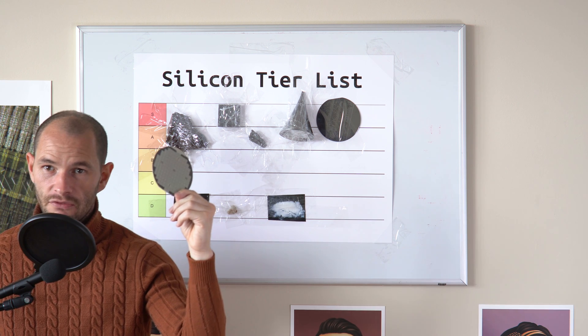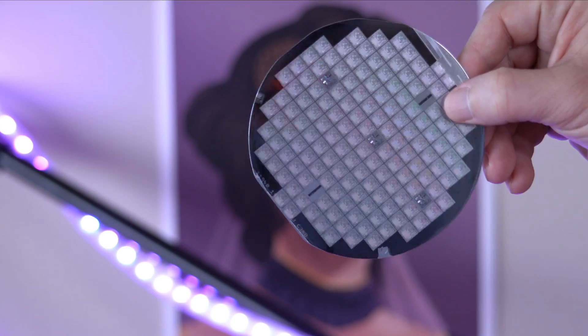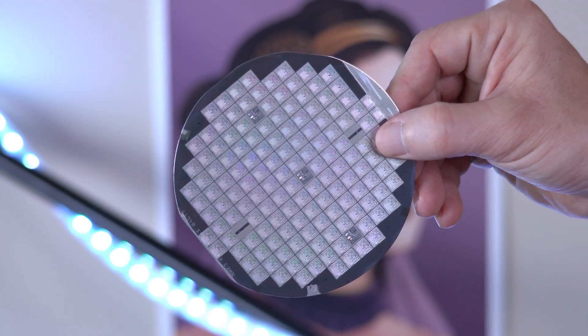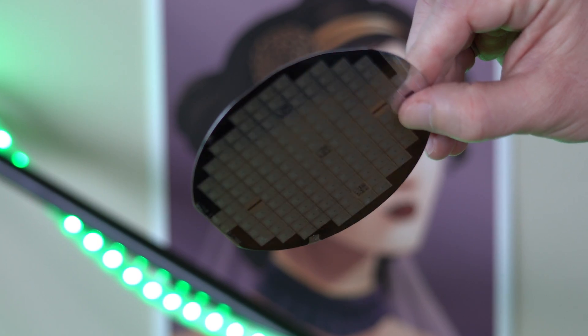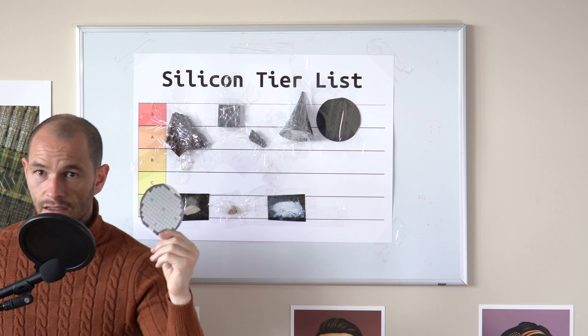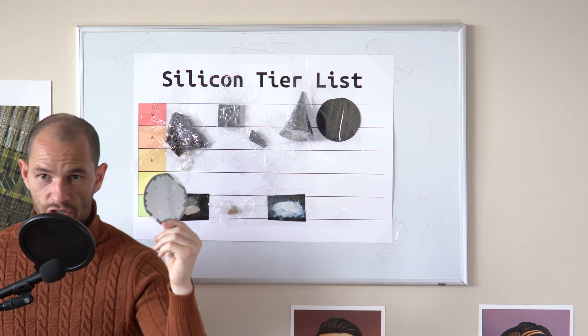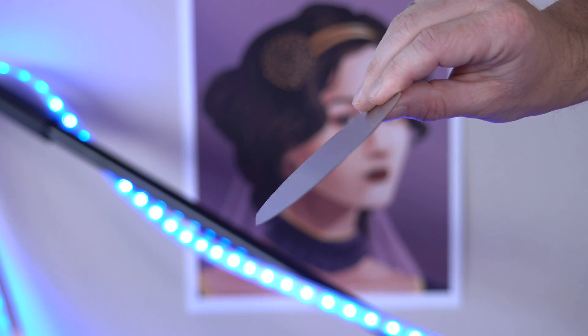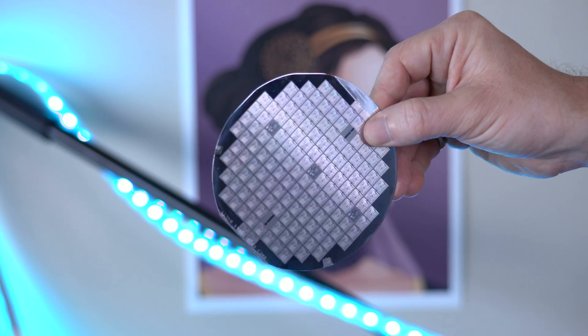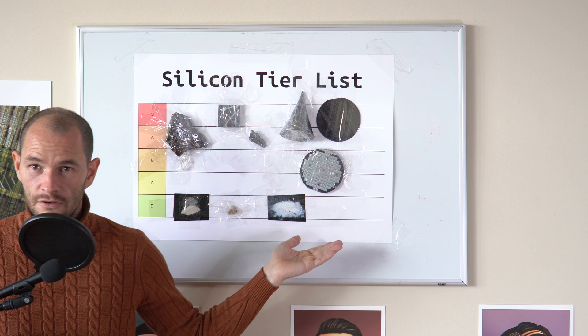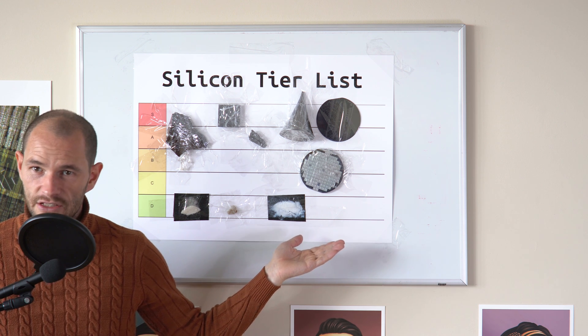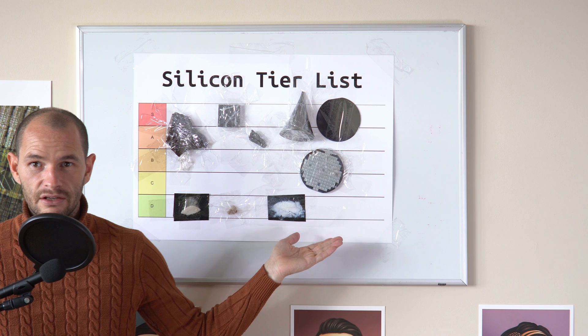Next, we have a finished silicon wafer. This is a silicon wafer that's likely undergone hundreds of chemical processing steps to get to this point. Each step in the process has to be done perfectly. Otherwise, the wafer could be ruined and get rejected. In fact, that's likely the reason that this wafer is in my possession in the first place. Each little square that you see on this wafer is supposed to end up as an individual chip. Silicon wafers like this one have tons of tiny interesting details to look at. For this reason, finished silicon wafers belong in the S tier, but I don't have any room, so I'll stick it in the B tier.